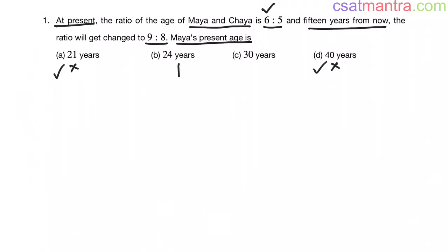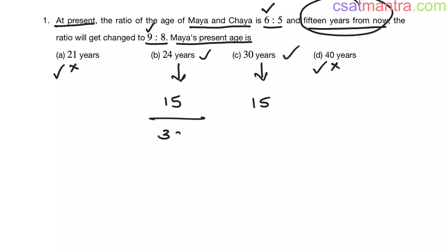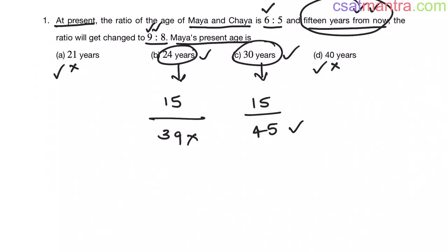Now we are left with options B and C. If you add 15 years to these ages, the result should be a multiple of 9. Adding 15 gives us 39 and 45. Now, 39 is not a multiple of 9, but 45 equals 9 × 5, so it is a multiple of 9.